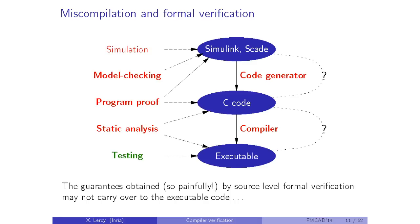Miscompilation reduces the usefulness of formal verification, and that's what really makes me sad. There are many kinds of formal methods — model checking, deductive program proof, static analysis — and a few of them operate directly on executable machine code. But most static analysis tools work at the C code level, and model checking can even work at the level of a model like Simulink or Scade. The guarantees obtained from those tools may be invalidated by bugs in the code generator that produces C from Simulink or in the compiler that produces executables from C. We get guarantees at the source level but are not entirely sure they apply to what's actually running in the system.